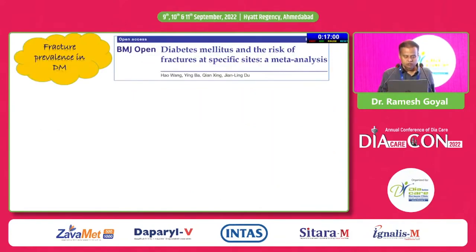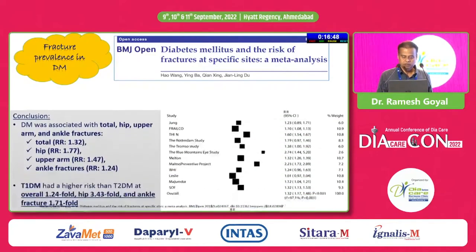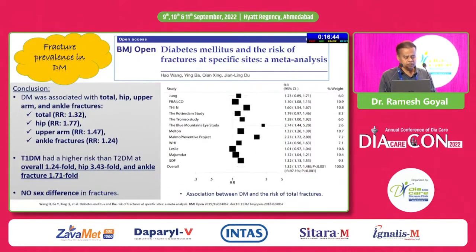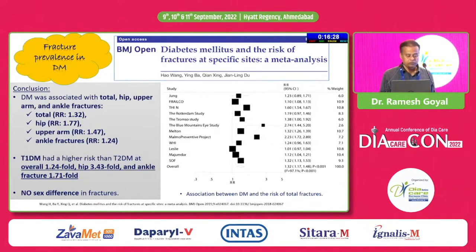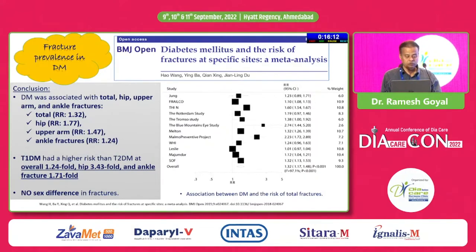Regarding fracture prevalence in diabetes — this was a publication in BMJ on diabetes mellitus and risk of fractures at specific sites, a meta-analysis. The conclusion was that diabetes was associated with total hip, upper arm, and ankle fracture risk. The relative risk was 1.32 for total, 1.77 for hip, 1.47 for upper arm, and 1.24 for ankle fracture. Type 1 diabetics had a higher risk than type 2 diabetics — 1.24-fold overall, 3.43-fold at hip, and 1.71-fold at ankle.